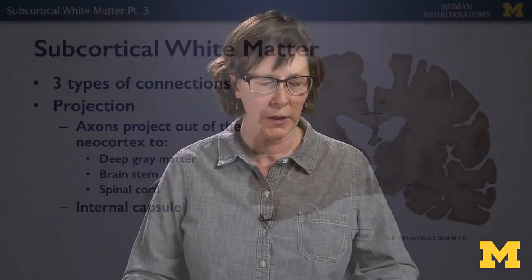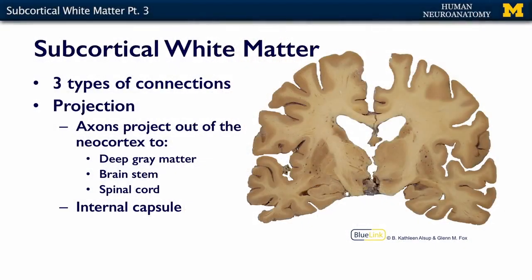The second type of white matter connection I want to talk about are the projection fibers. The projection fibers are fibers whose origin is in the cortex — projecting out of areas of the cortex and going to lower centers.